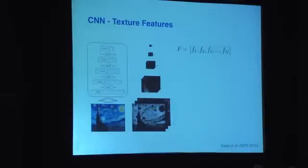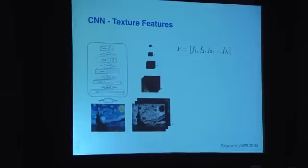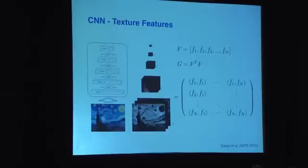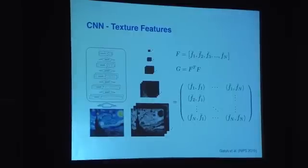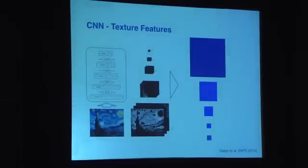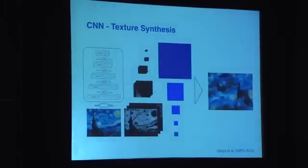We have a paper at this conference where we show that if we constrain not the exact feature activations but the correlations between feature maps across a number of layers, we get a pretty good model of natural textures. If F is a matrix of feature maps in a particular layer — where each column is a vectorized feature map — we take the matrix of inner products, a correlation matrix, where each entry is a dot product between two vectorized feature maps. This transforms the feature map representation into a texture representation that has lost all information about the spatial content of the image. If we find a new image that matches this texture representation across a number of layers, we can get a texturized version of any input image.